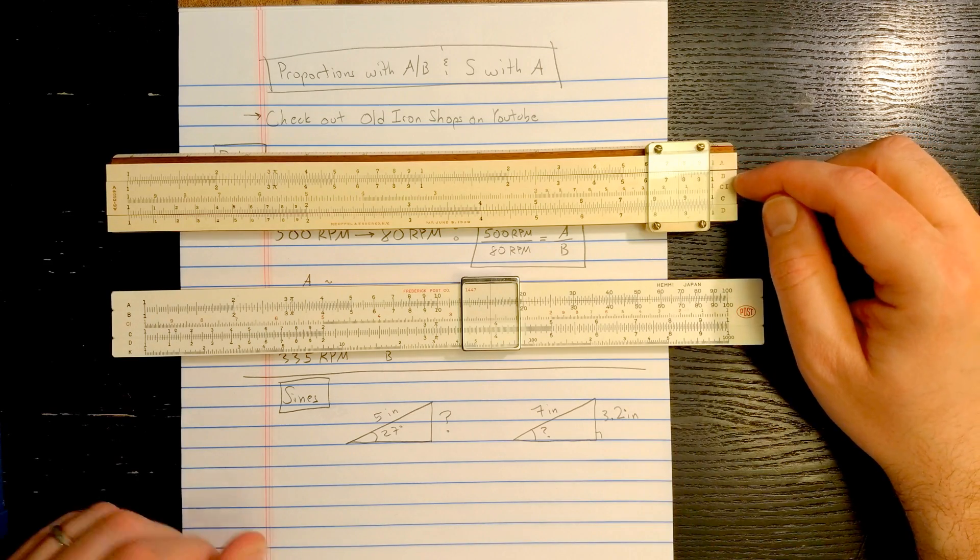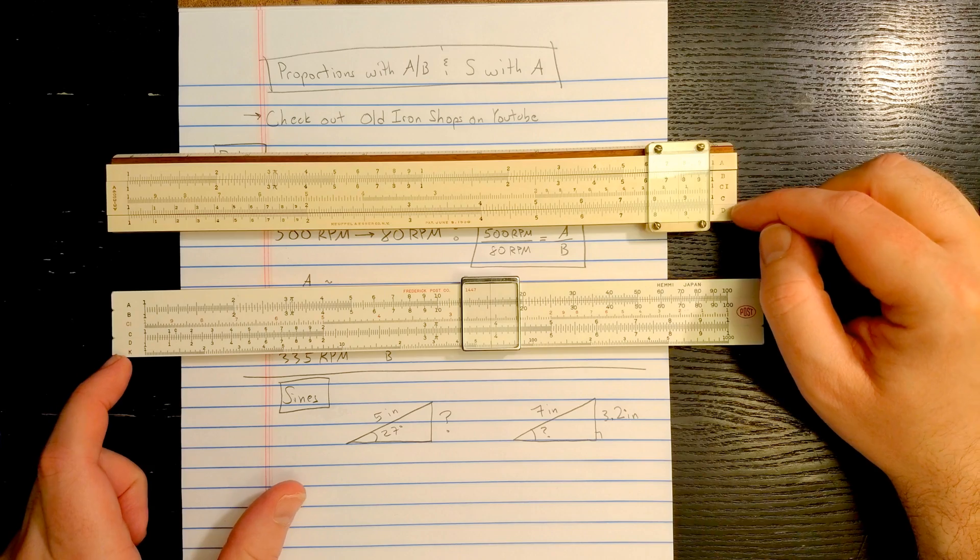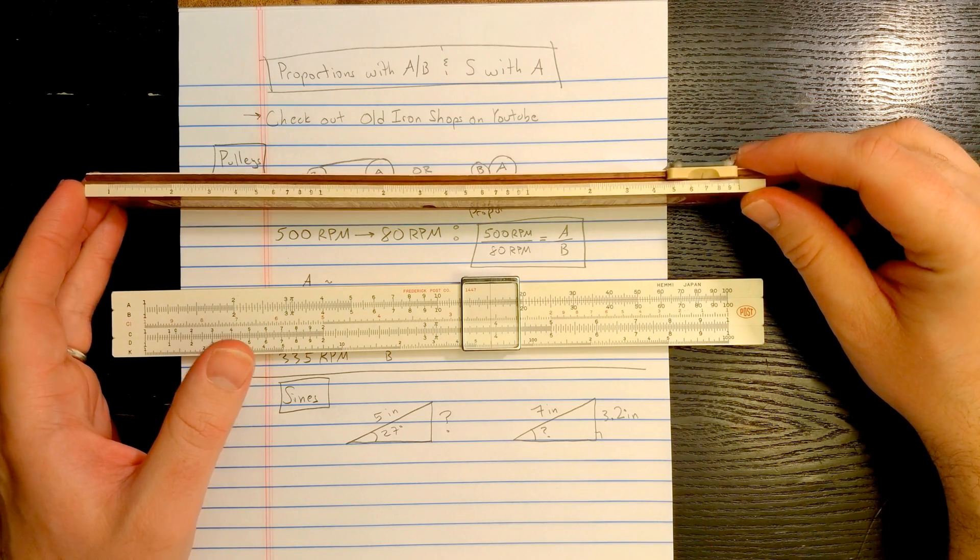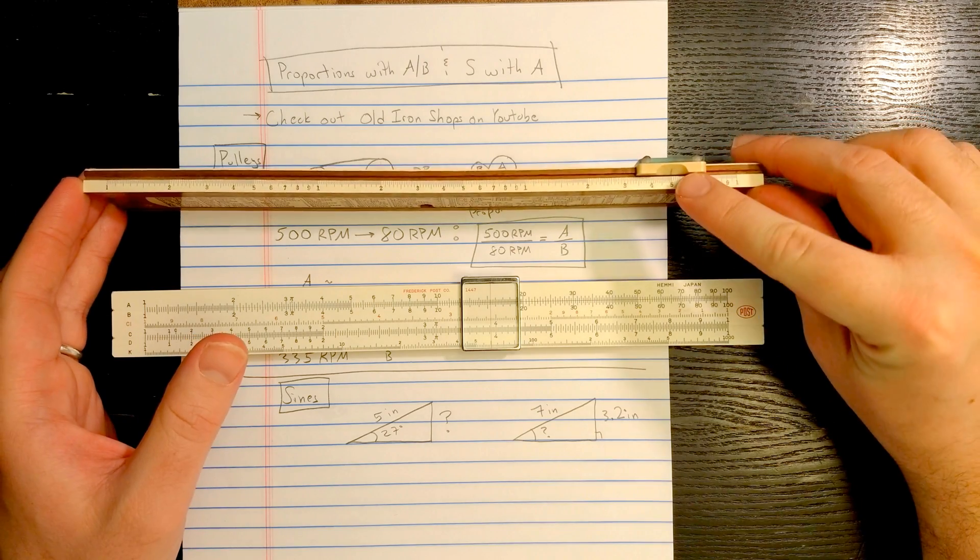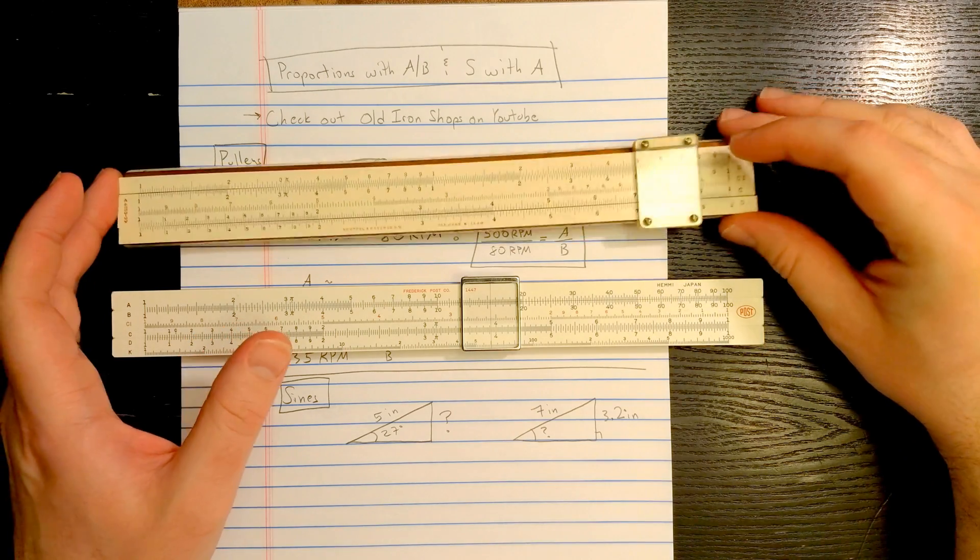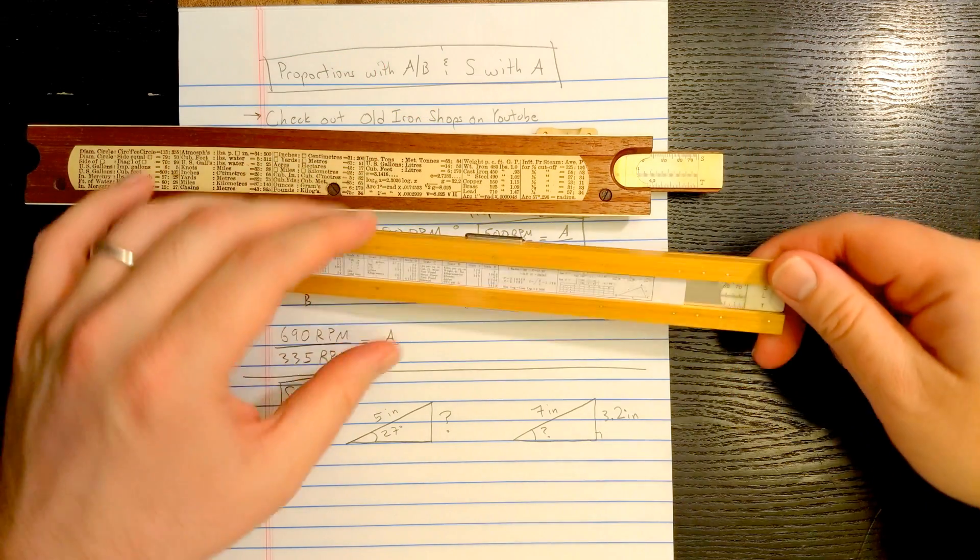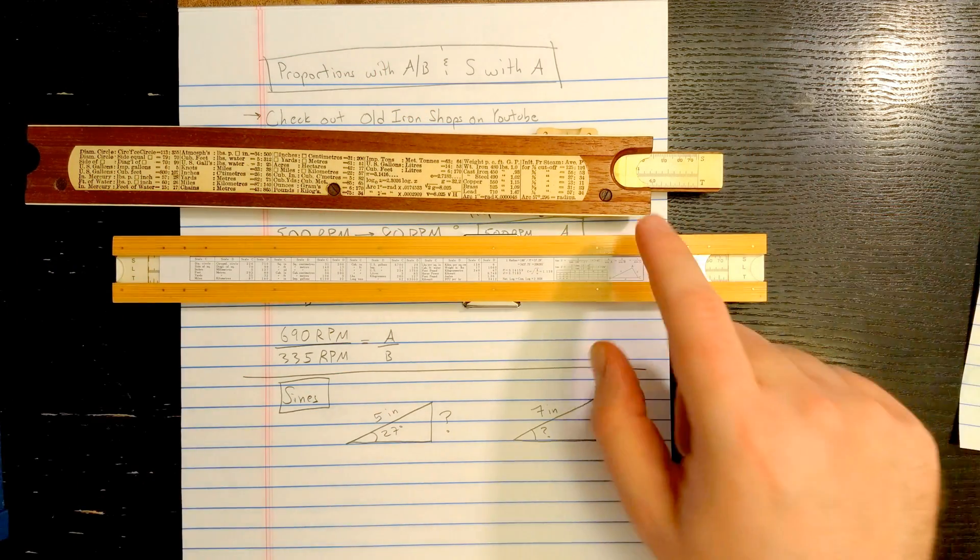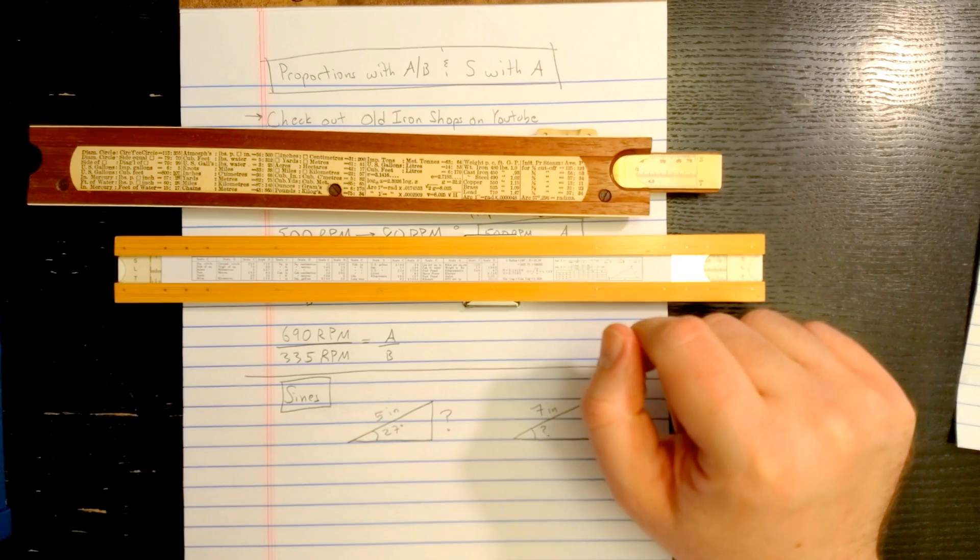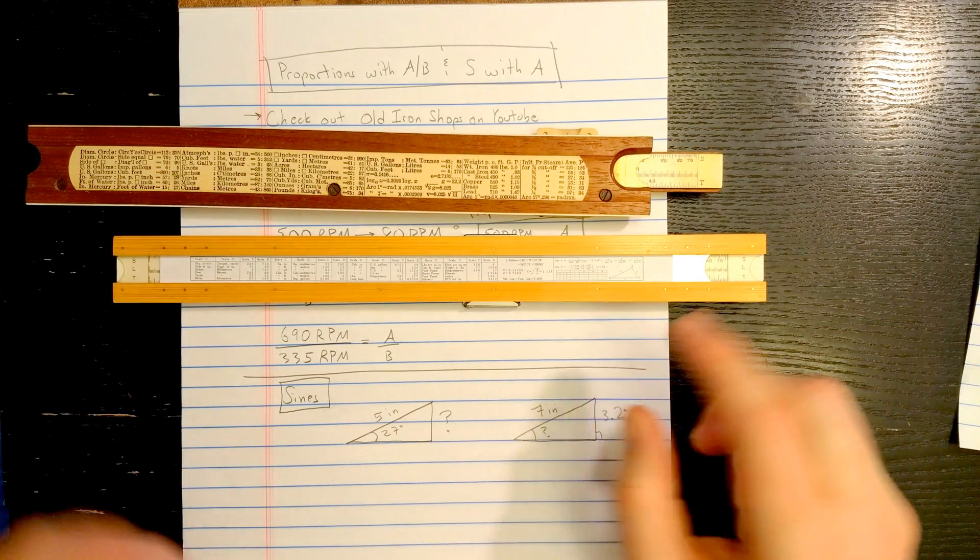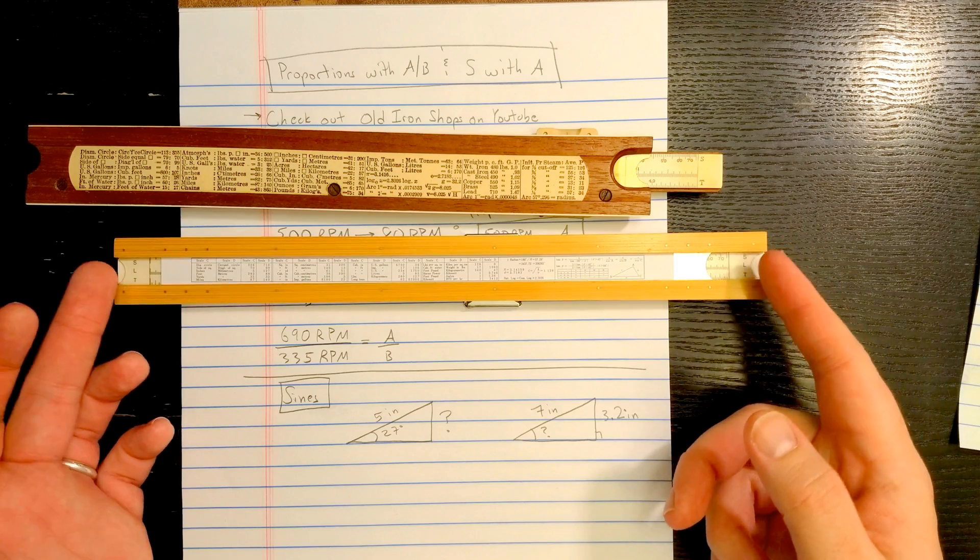Both of them have exactly the same scale set. Here we have A, B, C, I, C, D, and on this old K&E, the K scale is on the edge here, and you use it with this little line here. On the back of both Slide Rules, you have S, L, and T scales. And the K&E has one hairline for reading it on the back. Later versions of the Slide Rule don't have a hairline on the back. And then the Post Slide Rule has dual hairlines.